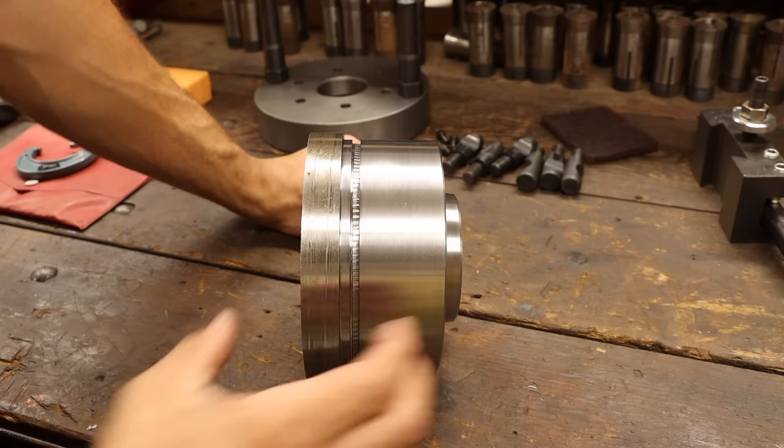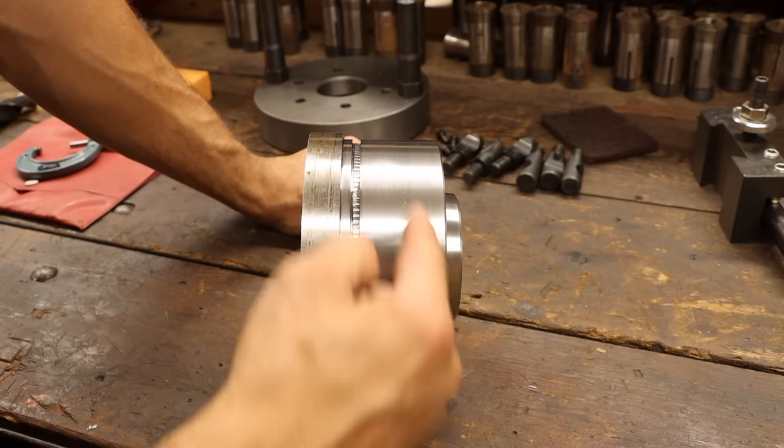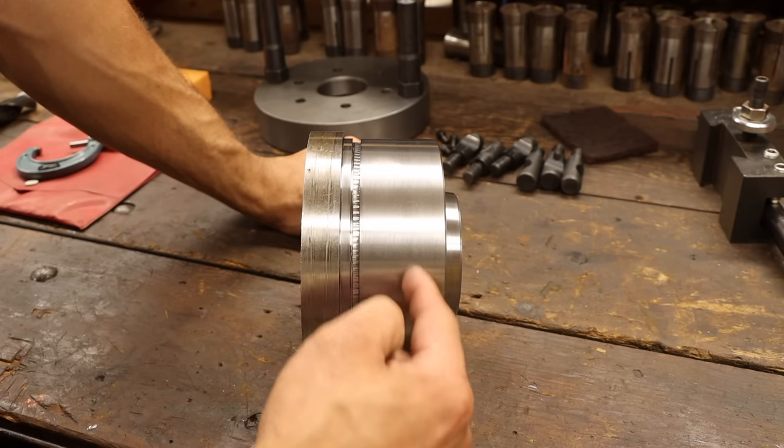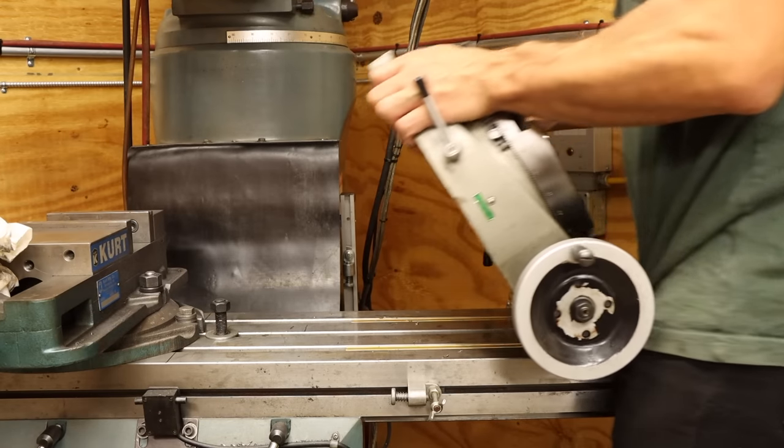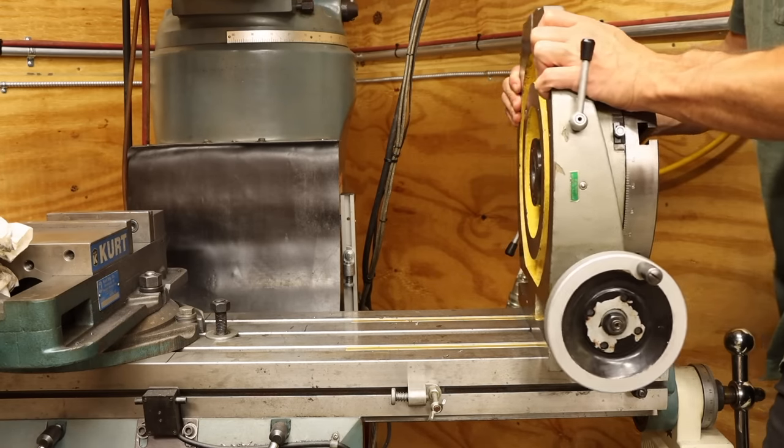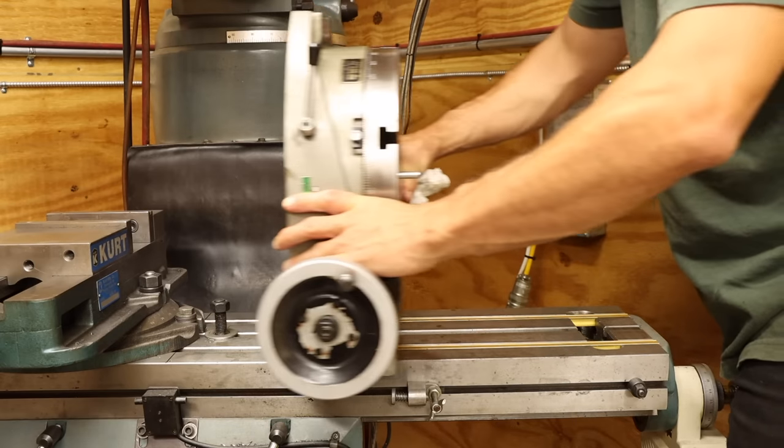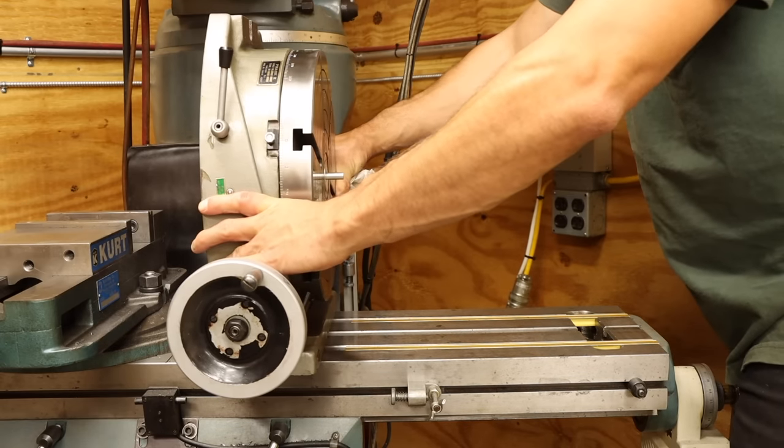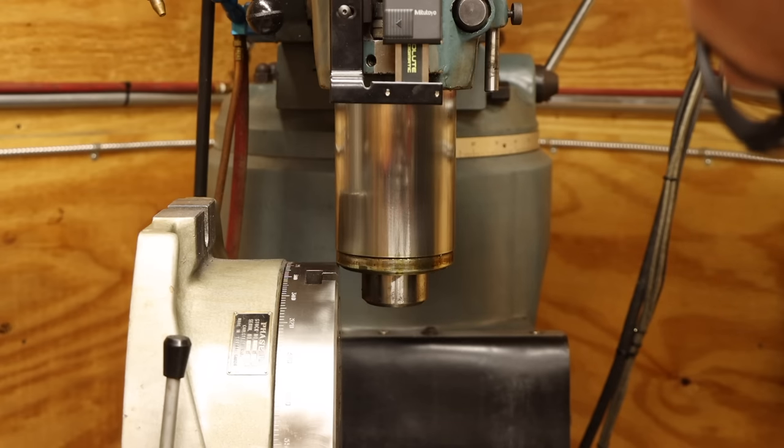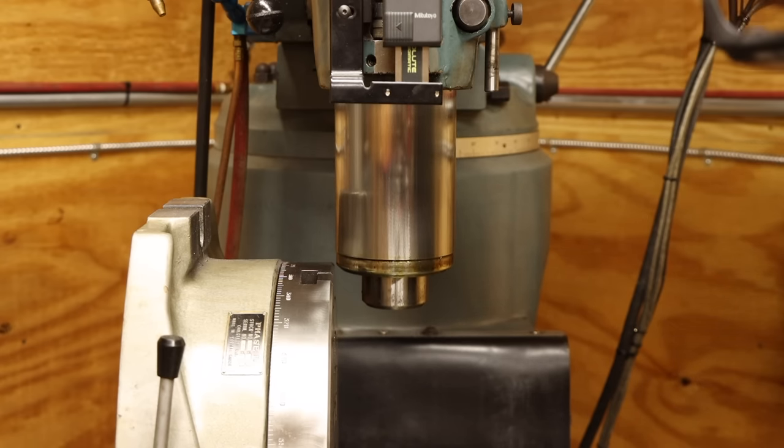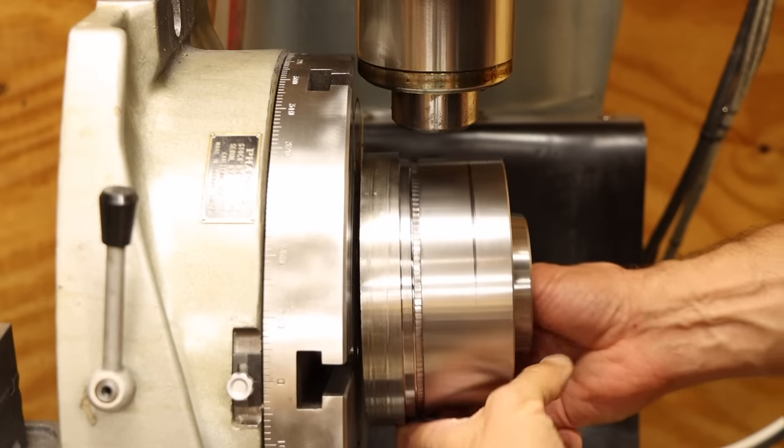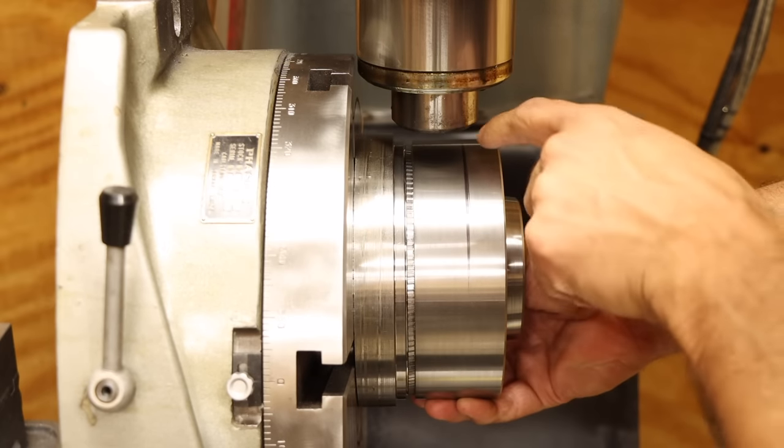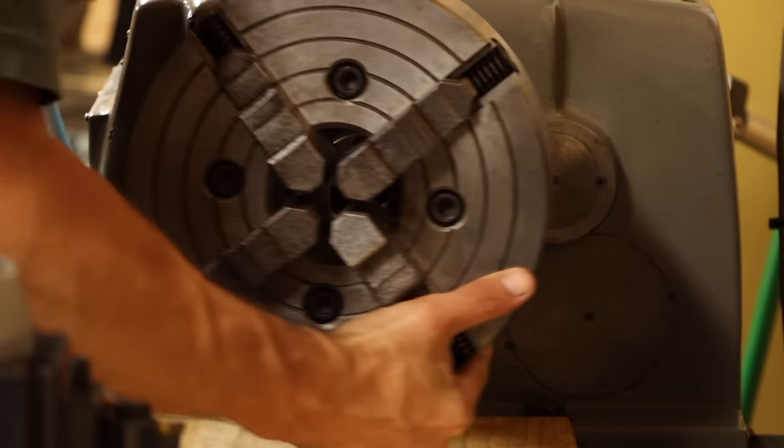Now you might be wondering why I used stock so thick in the first place. I have a good reason, and it has to do with the rotary table. I'll be mounting this part to the table for all of the hole operations. But when the table is in the vertical position, there needs to be room for the mill's quill. Leaving that extra material on the body bolsters out the end, giving me the clearance I need. I'm not quite ready to mount to the table though, since the bottom face is still untouched. So it's back to the lathe.